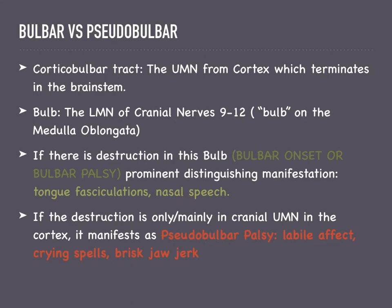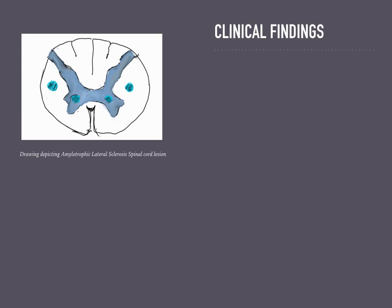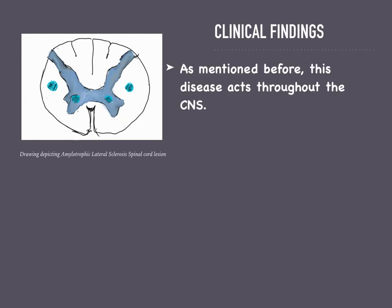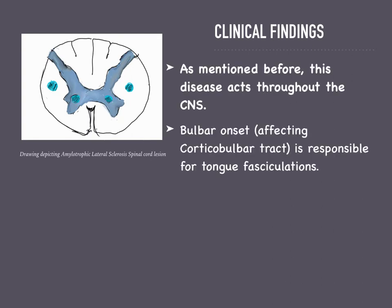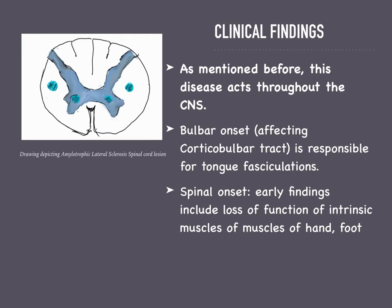In general, amyotrophic lateral sclerosis is a disease that acts throughout the CNS. There can be a bulbar onset, where you would have tongue fasciculations and a nasal voice towards the beginning of the disease.